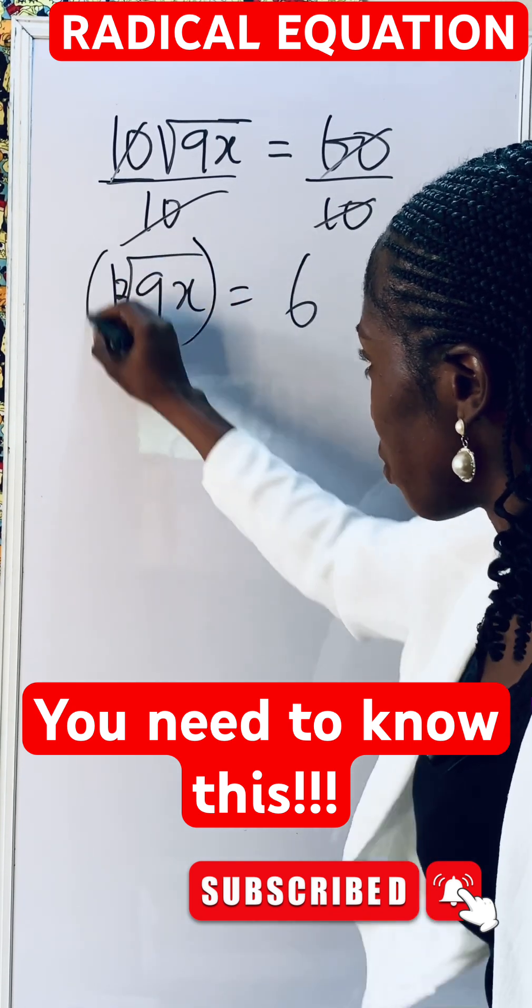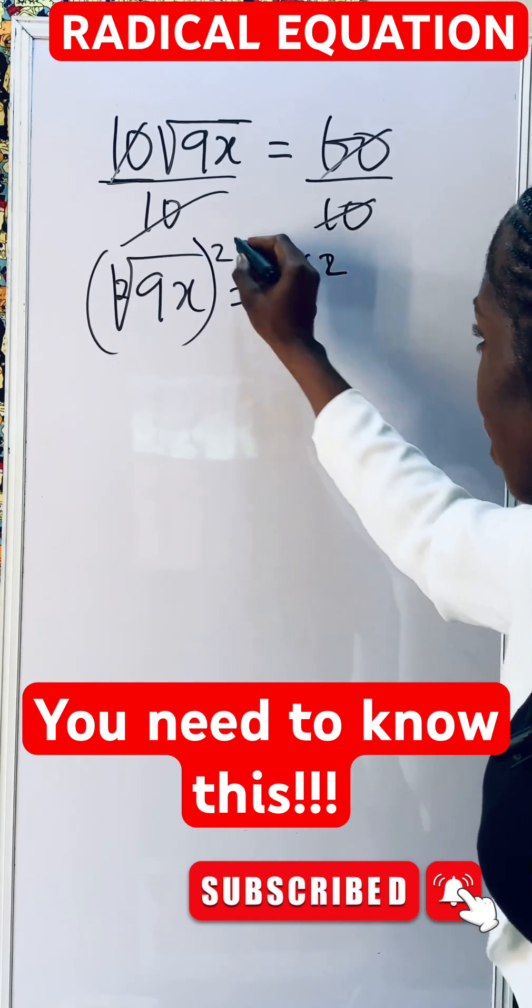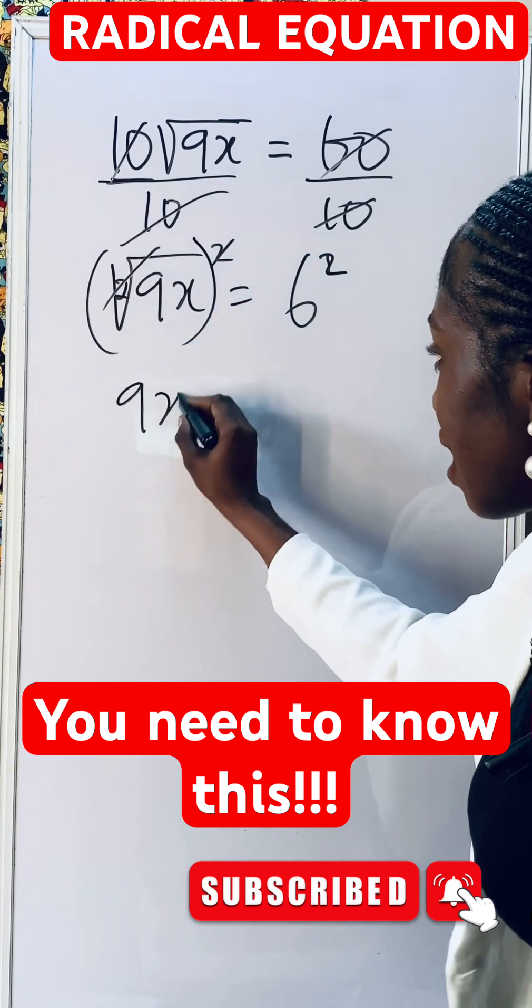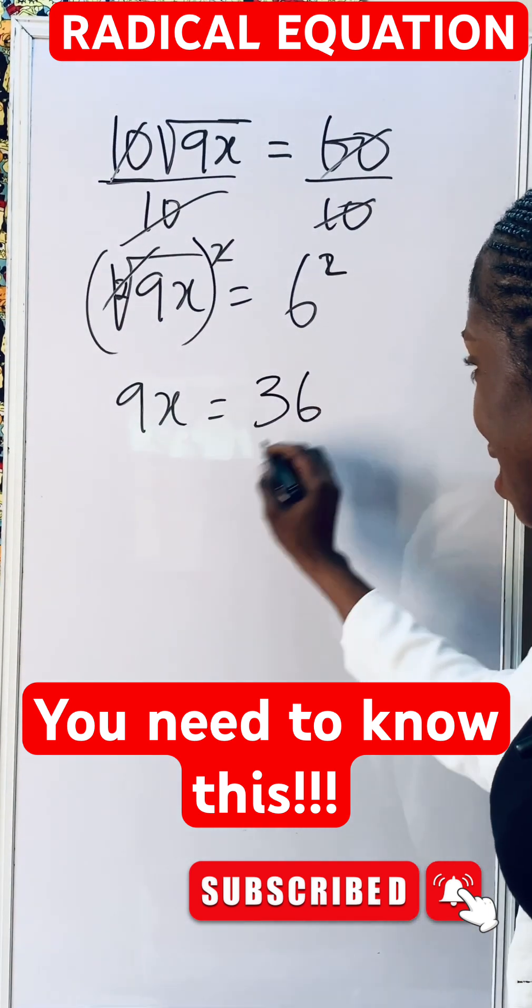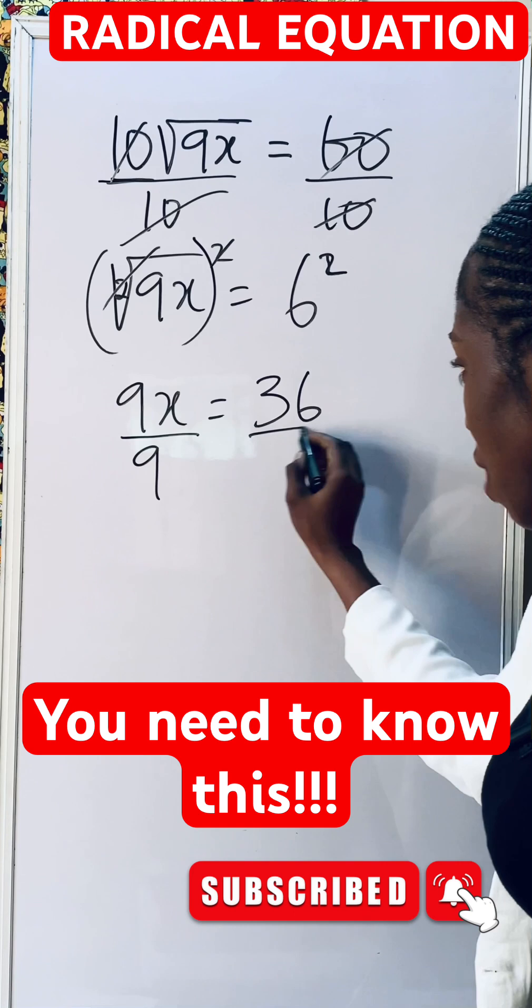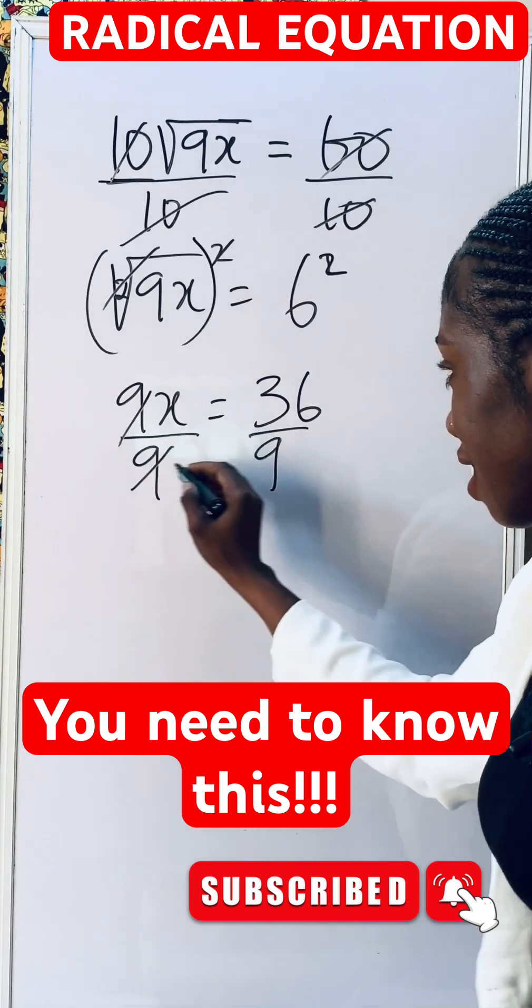To remove it, you square both sides, so this square we cancel. We have 9x equals 6 squared, which is 6 times 6 to give you 36. To get your x, divide by the coefficient, which is 9, and x is going to give us 4.